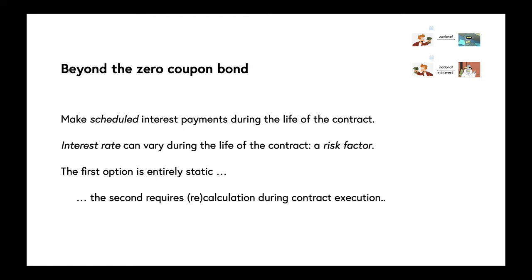Going beyond that model, we can make scheduled interest payments during the life of the contract, for example paying interest every month or year. The interest rate can be made to vary during the life of the contract. Technically that gets called a risk factor because potentially it adds risk to the engagement of the contract. The first option, if we simply make scheduled payments without a risk factor, is entirely static.